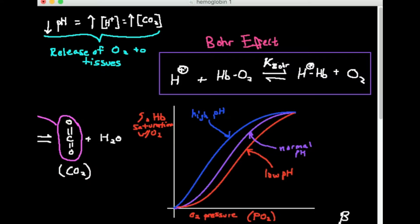Now we know in the blood there's a buffer system called the bicarbonate carbonic acid buffering system, which we'll cover in another video. There's a certain pH in the blood — around 7.4. But depending on where you are in the blood, whether near the lungs or near a metabolically active tissue, the pH can actually change a little bit.